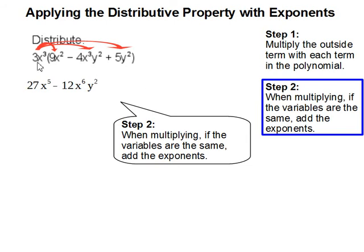Then the same thing here. 3 times 4 is 12. x³ times x³ is x⁶. And since there's no y in the outside term, y² comes down.